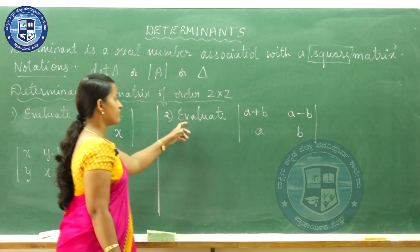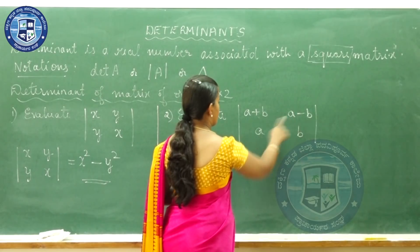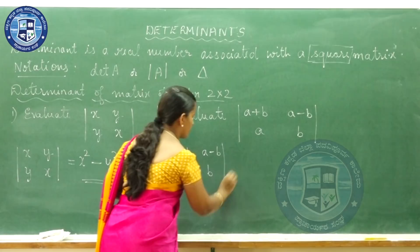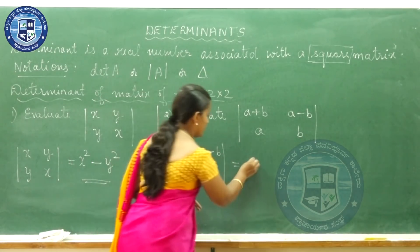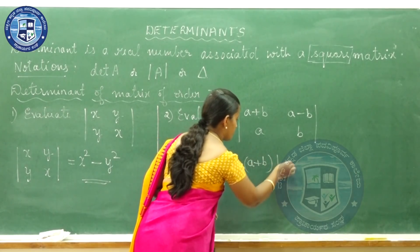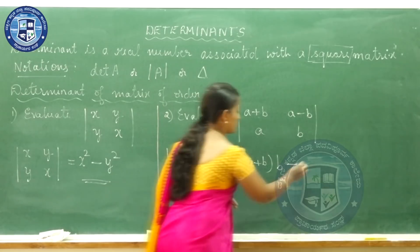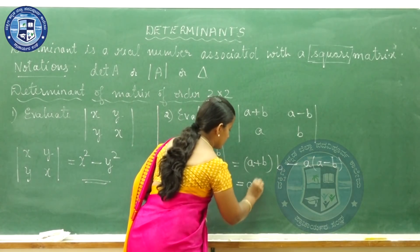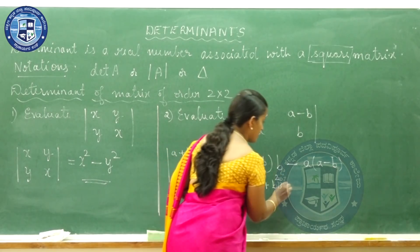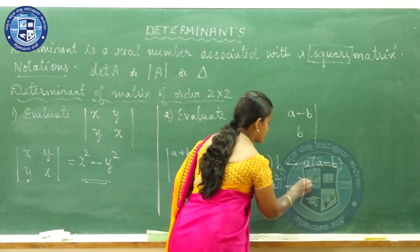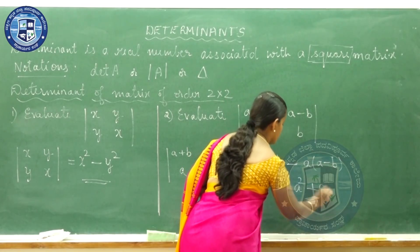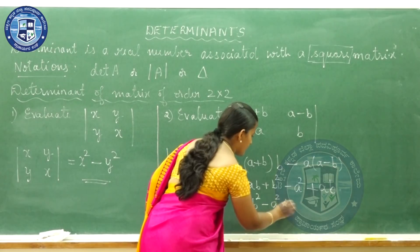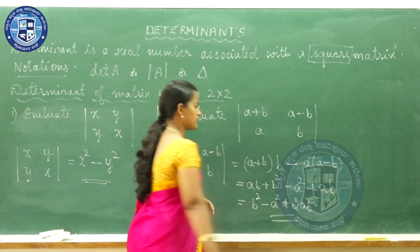The determinant of [a+b, a-b; a, b] equals (a+b) into b minus a into (a-b). Let us simplify: a·b + b·b is b² minus a·a is a² plus 2ab. So the answer is b² - a² + 2ab.